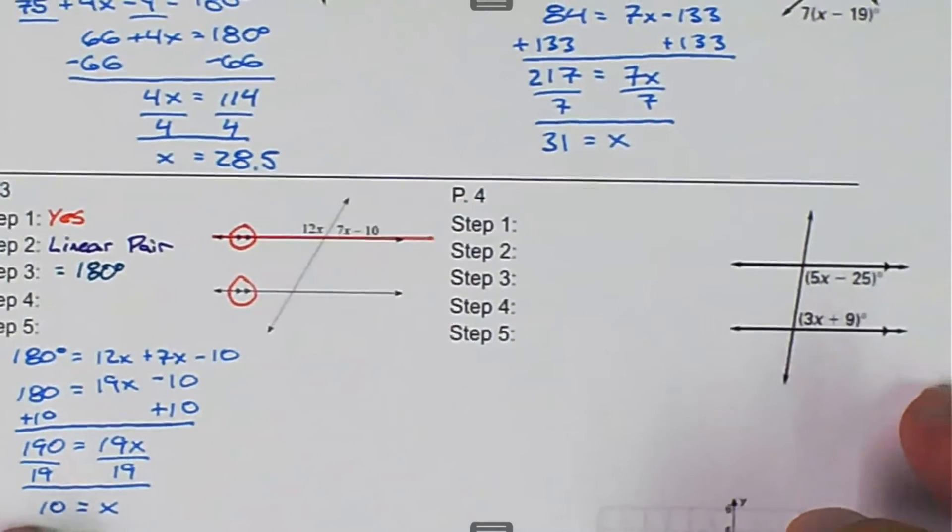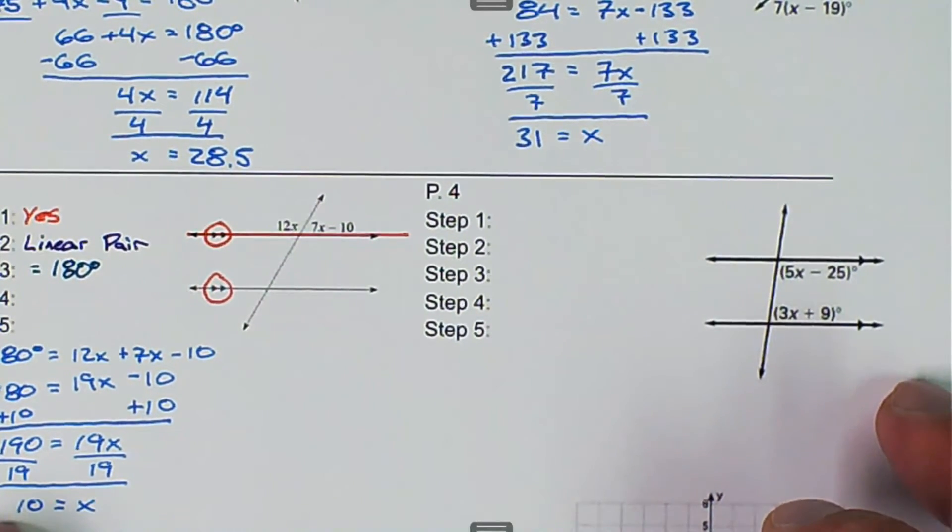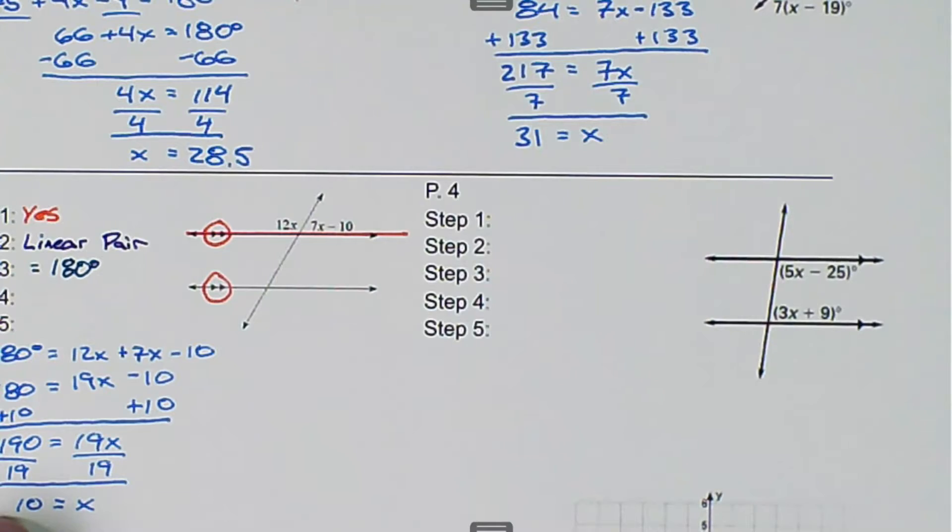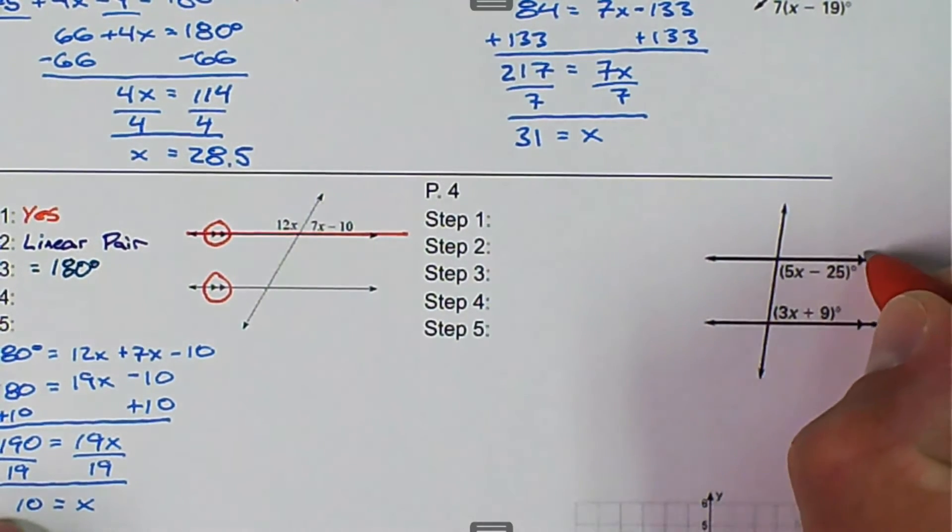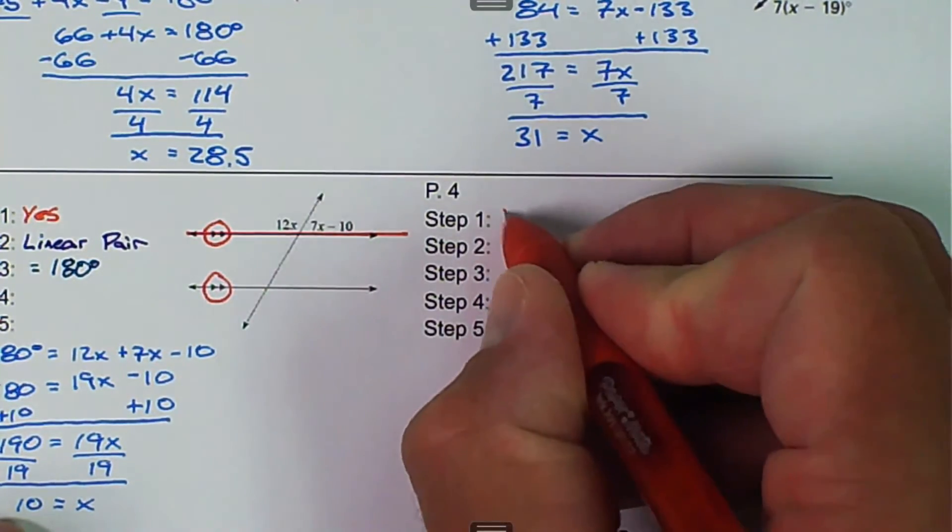Next, we look at problem 4. And again, the first part is we want to decide are they parallel? And the answer here is yes, because we have one arrow here and one arrow here, so these are parallel.